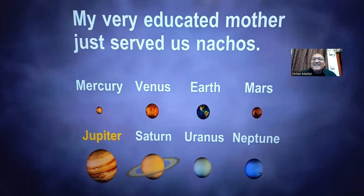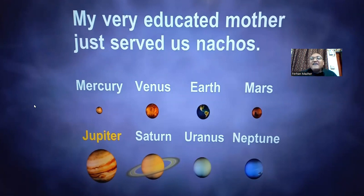My very educated mother just served us nachos — Mercury, Venus, Earth, Mars, Jupiter, Saturn, Uranus, Neptune. My very educated mother just served us nachos — Mercury, Venus, Earth, Mars, Jupiter, Saturn, Uranus, Neptune.